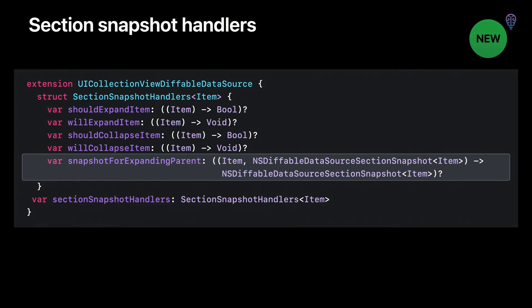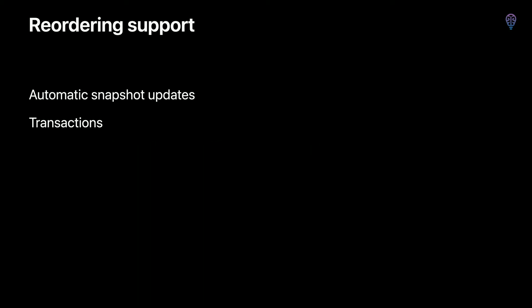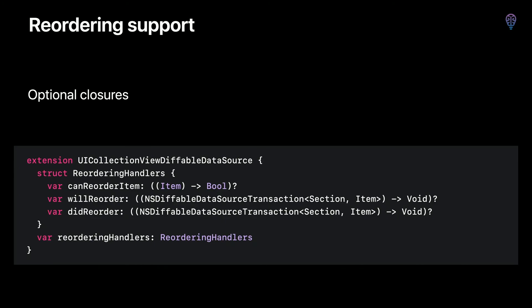That wraps up section snapshots. Next let's chat about reordering APIs added to diffable data source. One of the advances diffable data source brings is modeling collection view data with unique item identifiers. With these unique identifiers, the framework can automatically commit data reordering changes on the application's behalf based on user interactions. However, our application also needs to be notified that a user-initiated reordering took place so it can persist the new visual order to its backing store — its final source of truth. To support this, diffable data source now has a new property: reorderingHandlers.